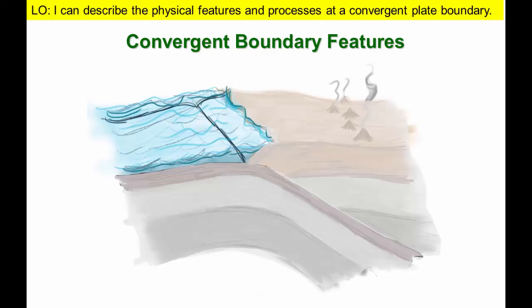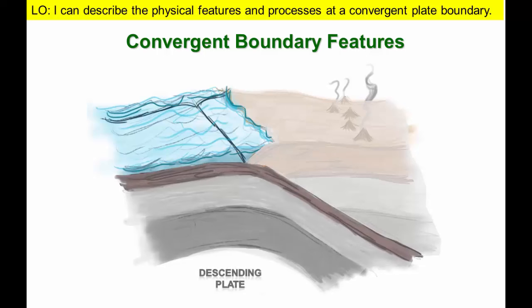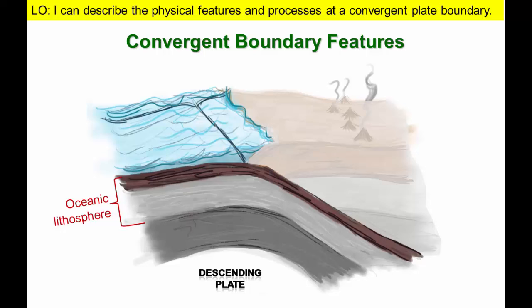We'll begin by explaining the physical features associated with a convergent boundary formed where a plate of oceanic lithosphere is consumed below a continental plate. First, we will have a descending plate that is pushed down into the mantle. In this example, we have a plate composed of oceanic lithosphere that turns downward along the trench, which represents the boundary between the two plates.